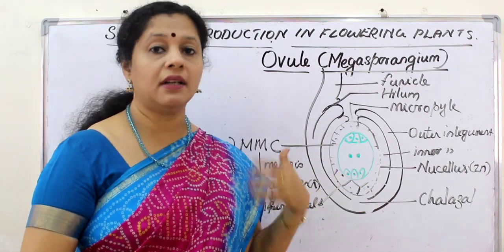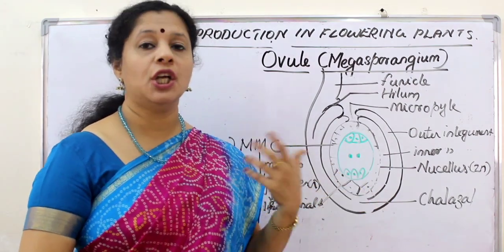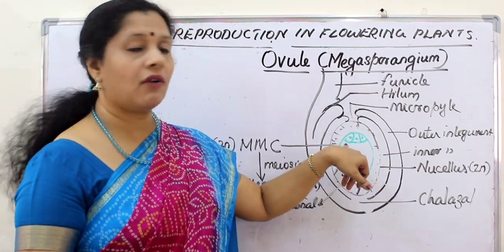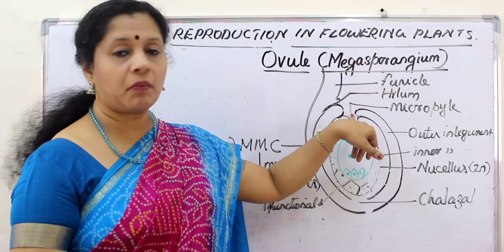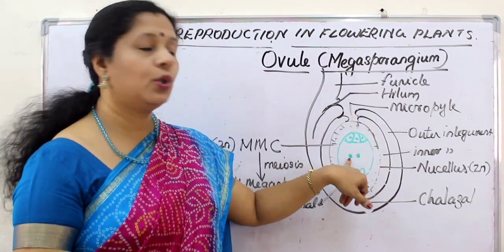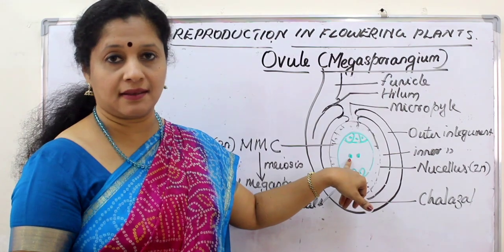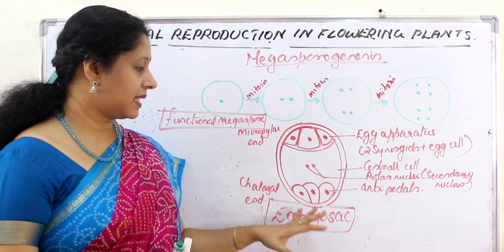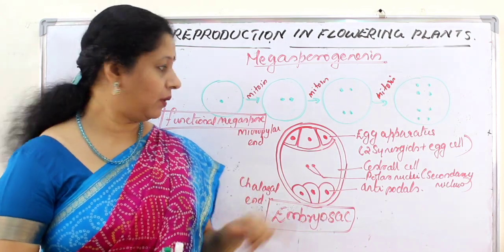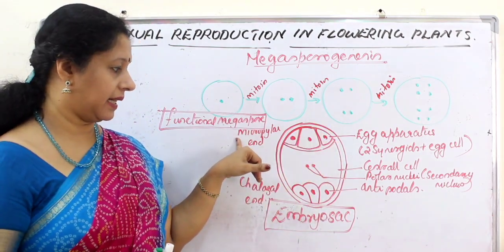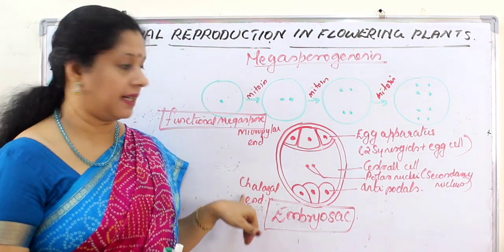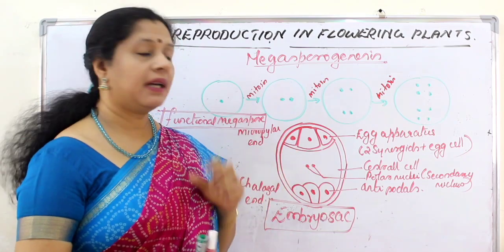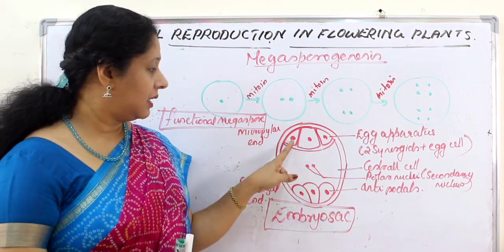The functional megaspore underwent repeated free nuclear division to reach the eight-nucleate stage, then wall formation started. Three nuclei form walls at the micropylar end, three come to the chalazal end, and two nuclei remain in the central cell. Finally we get the embryo sac. The embryo sac has eight nuclei: three near the micropylar end, three near the chalazal end, and two in the central cell.